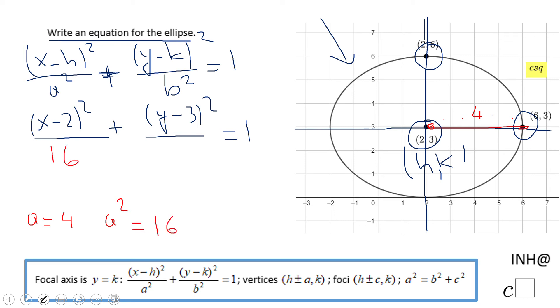And similarly, I'm going to look from the distance from this center to this vertex, which is three, and it's going to be b. b is three, so which means b squared is nine.